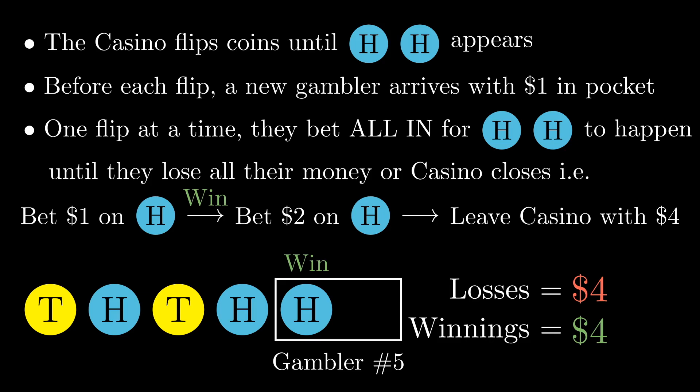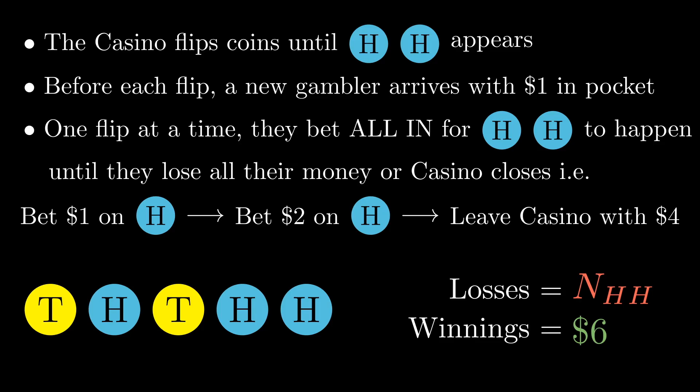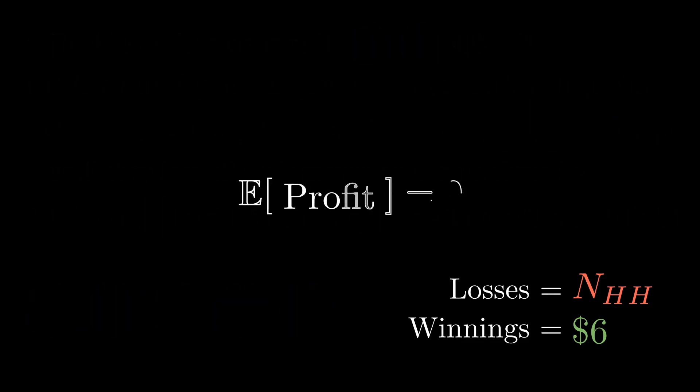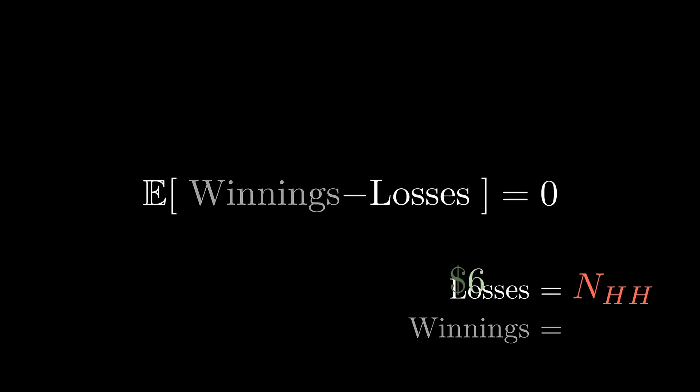This last gambler would love to place another bet, but the casino closes after coin flip five. Because of this, the gambler is forced to go home with $2 in winnings. In the heads-tails sequence, this last gambler had no winnings at all. In summary, the total losses are E(N_HH) — one dollar for each gambler — but the winnings are now $6: four dollars from the second-to-last gambler who won both bets, plus an extra two dollars from the very last gambler. Applying the optional stopping theorem, the expected value of N_HH must be six.